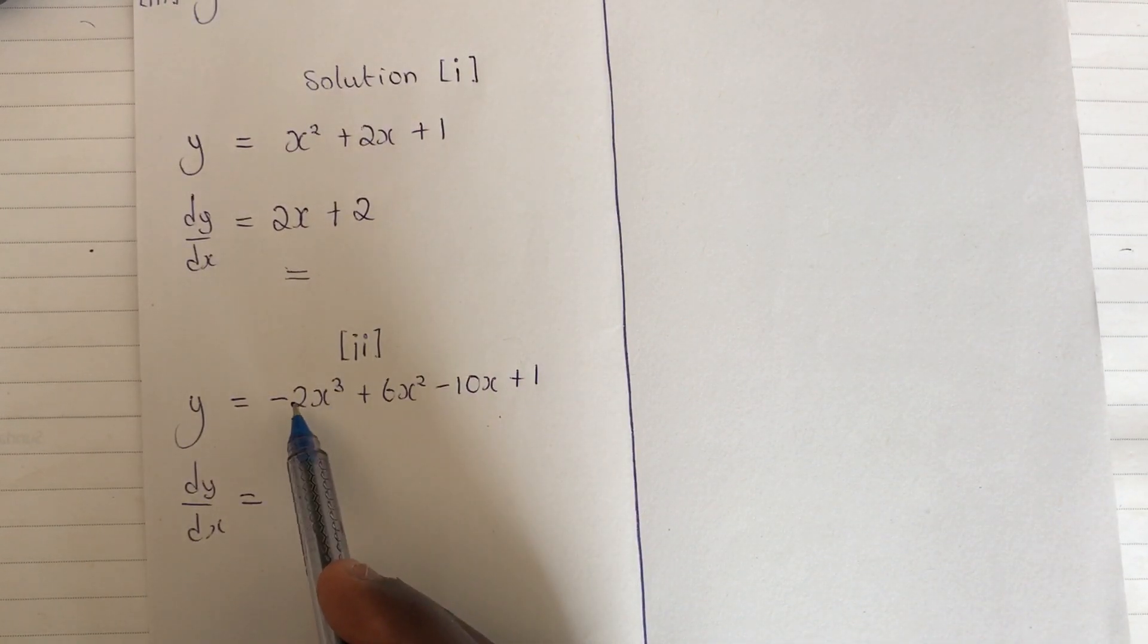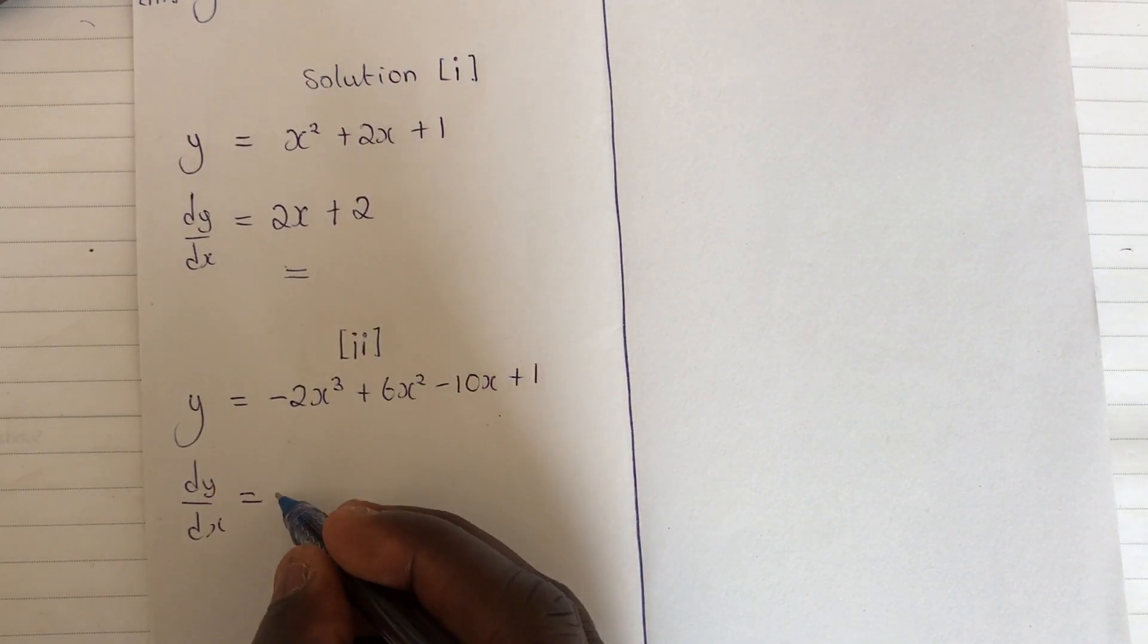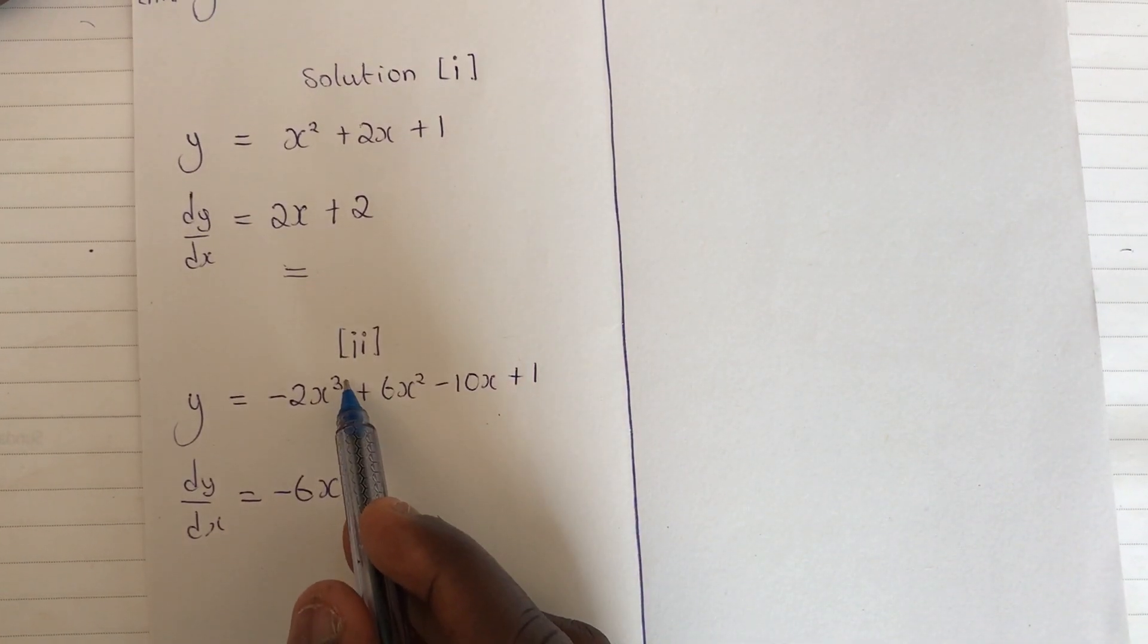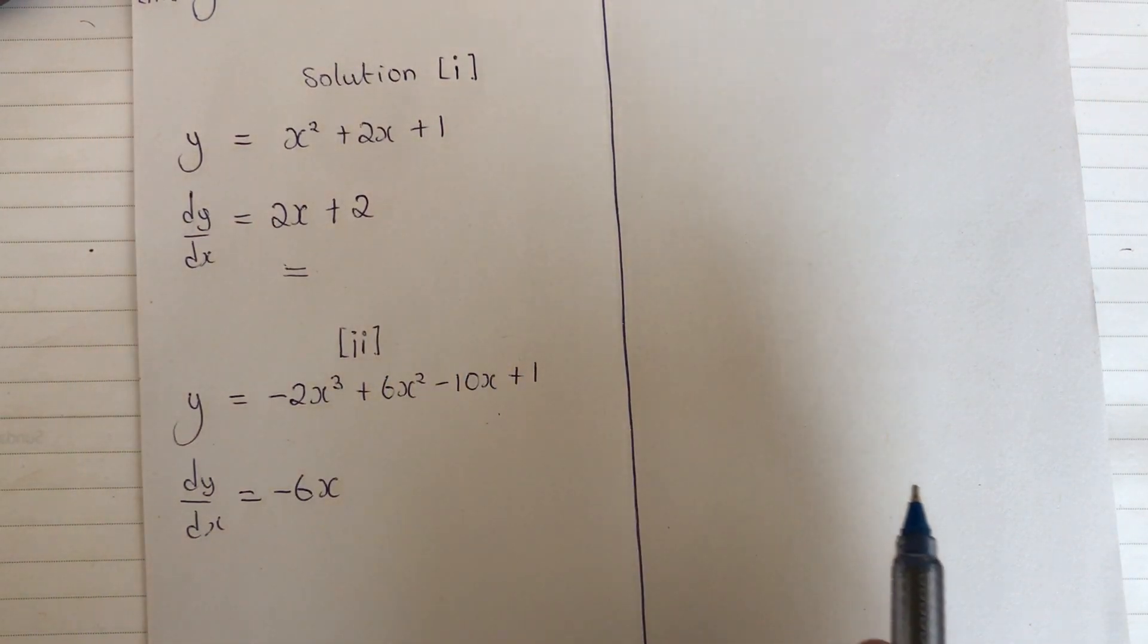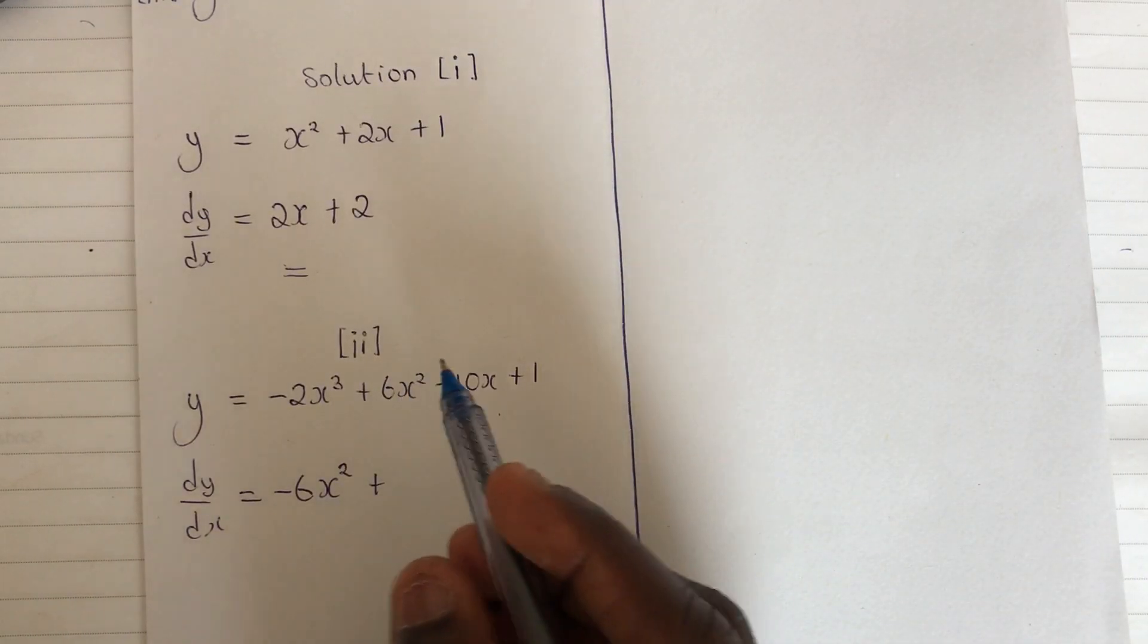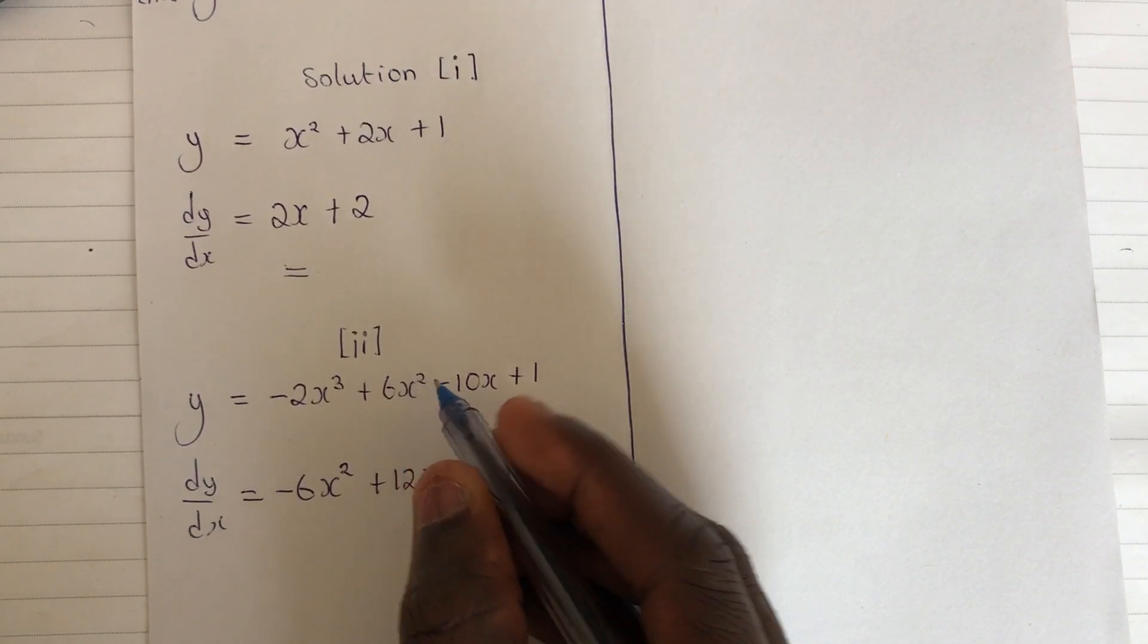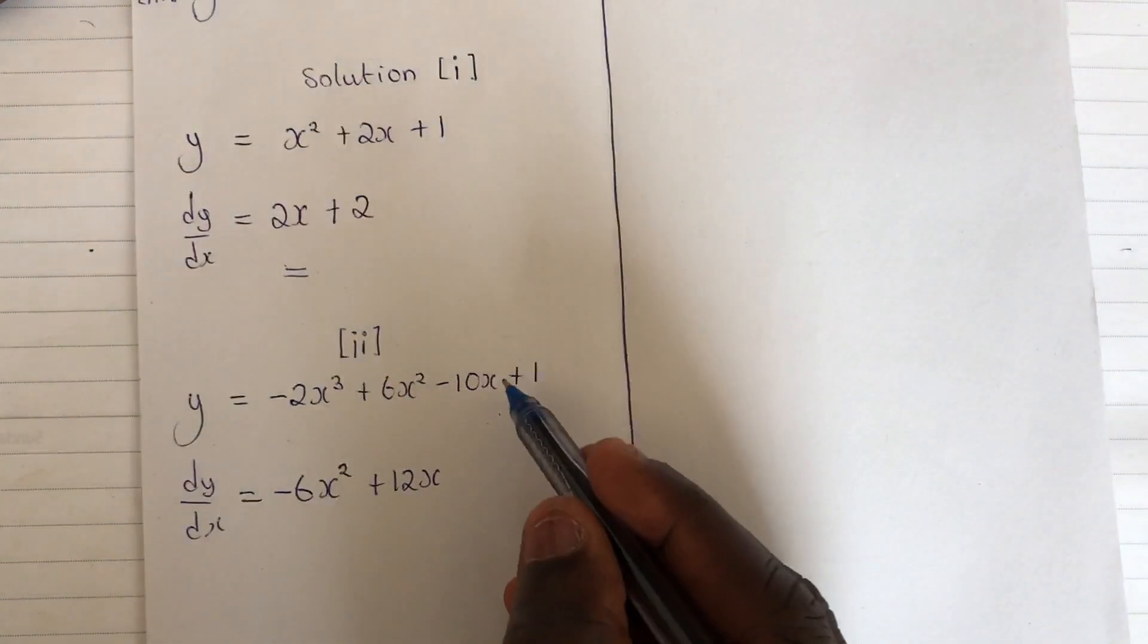Now if you differentiate minus 2x cubed, the result is minus 6x squared. Why? Use this three to multiply this, we are having minus 6x. Reduce this power by 1, subtract 1 from the exponent. Remember if you watch the introduction you see that this rule is there. So I have x squared plus 2 times this 6, we are having 12x to the power 2 minus 1, which is the same as 1, giving us 12x.